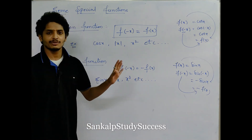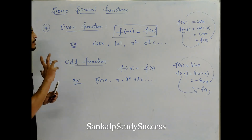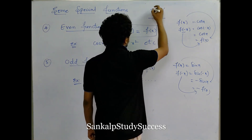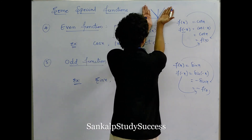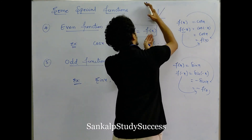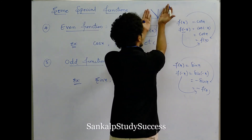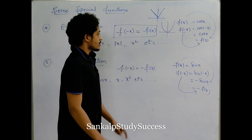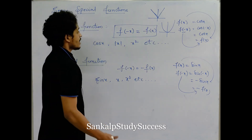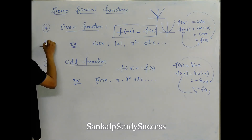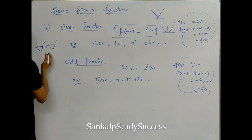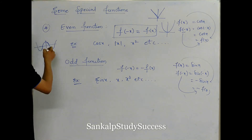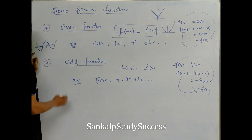This is a very important point about even and odd functions. Graphically, an even function is symmetrical about the y-axis. If you fold the paper along the y-axis, the two sides will coincide exactly — for example, the modulus function, a parabola, and the cos function are all symmetric about the y-axis and are even functions.